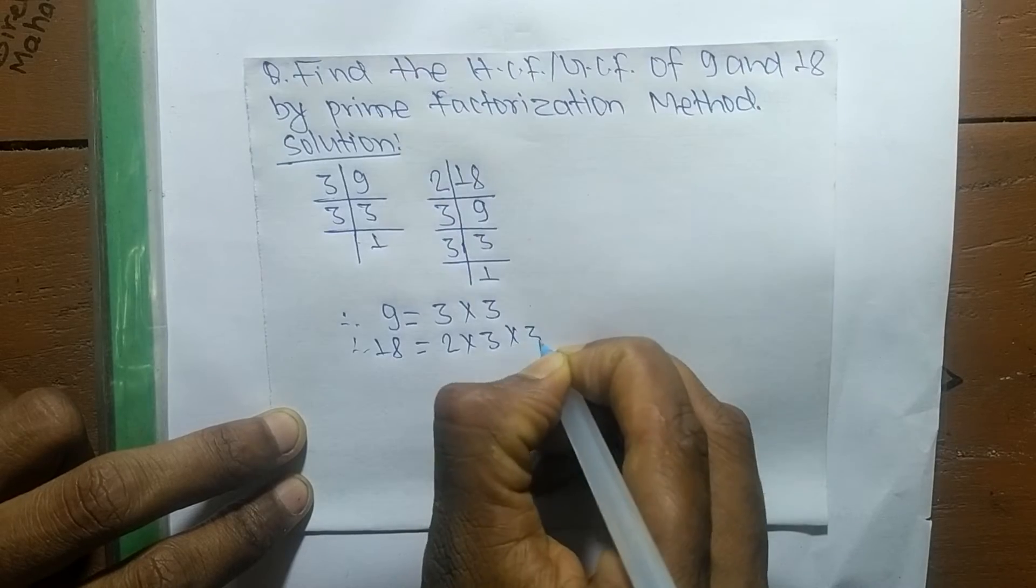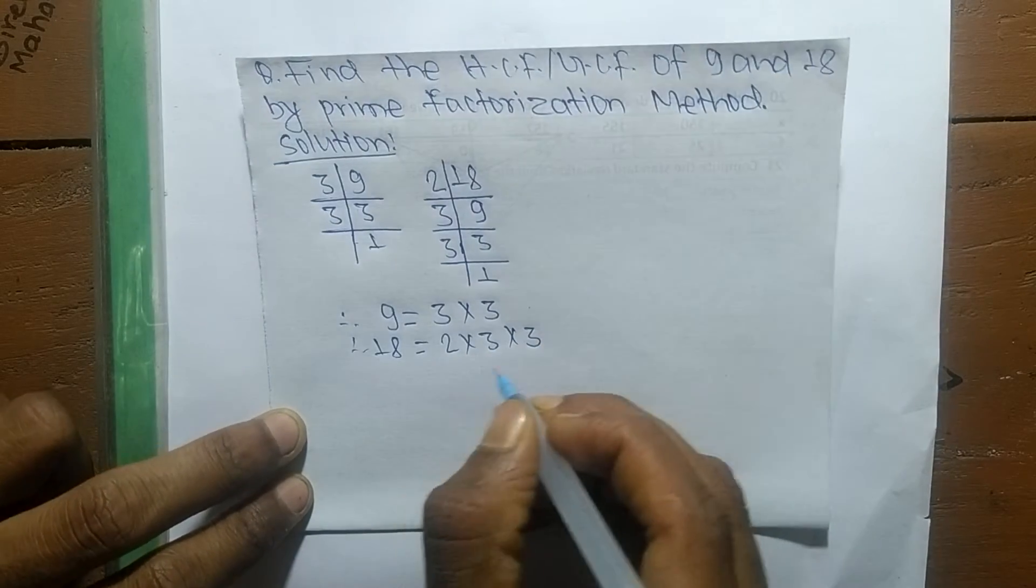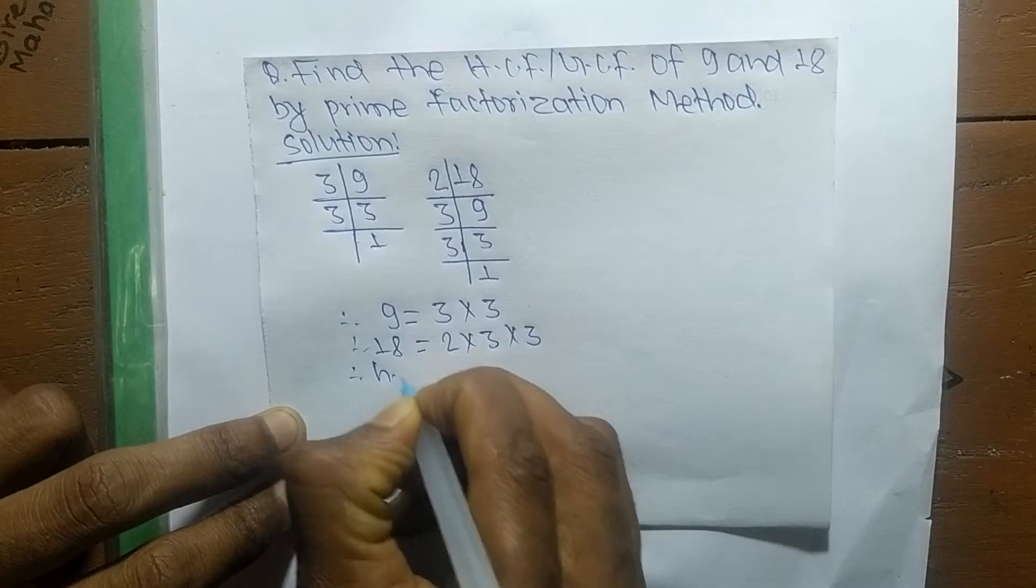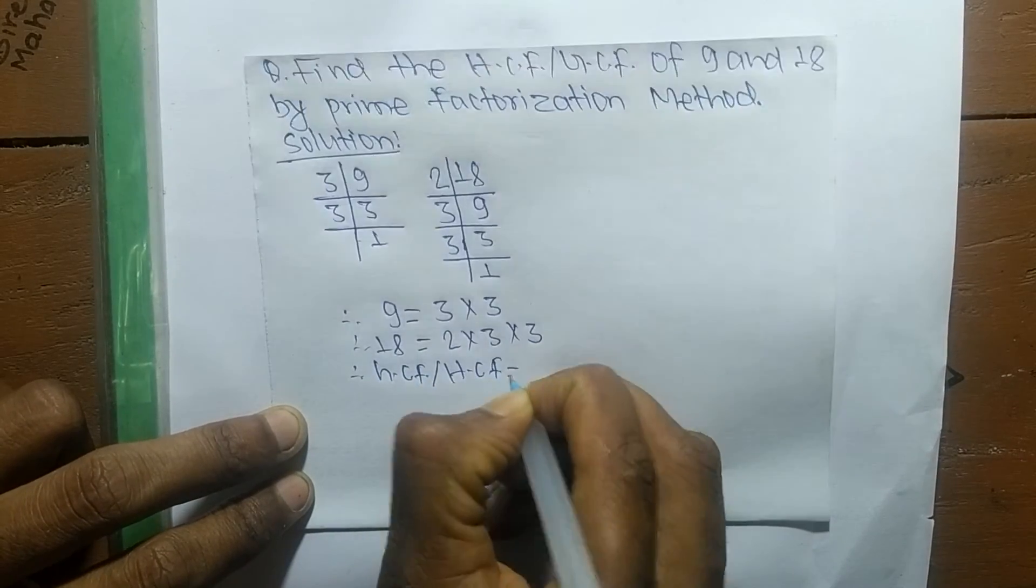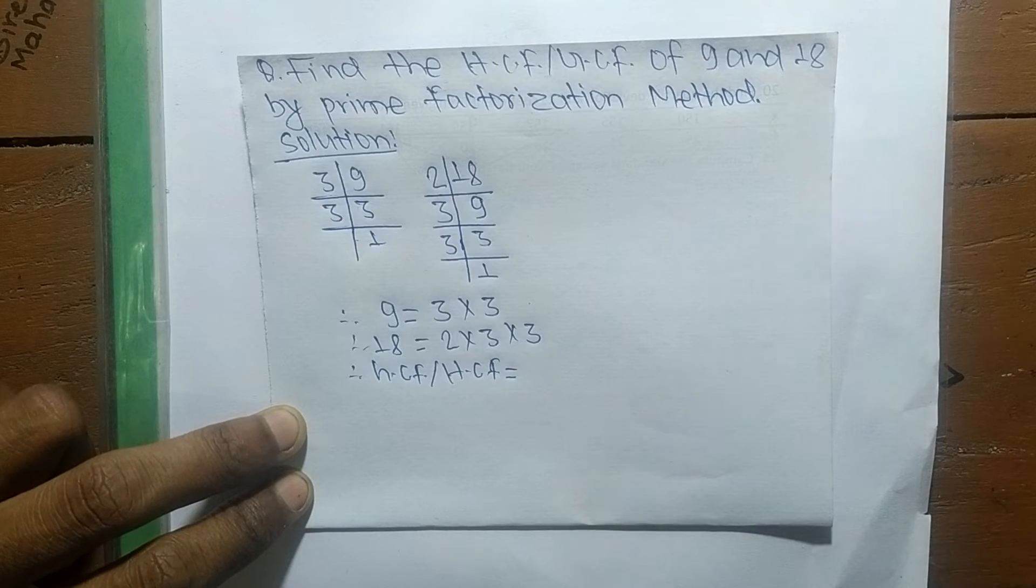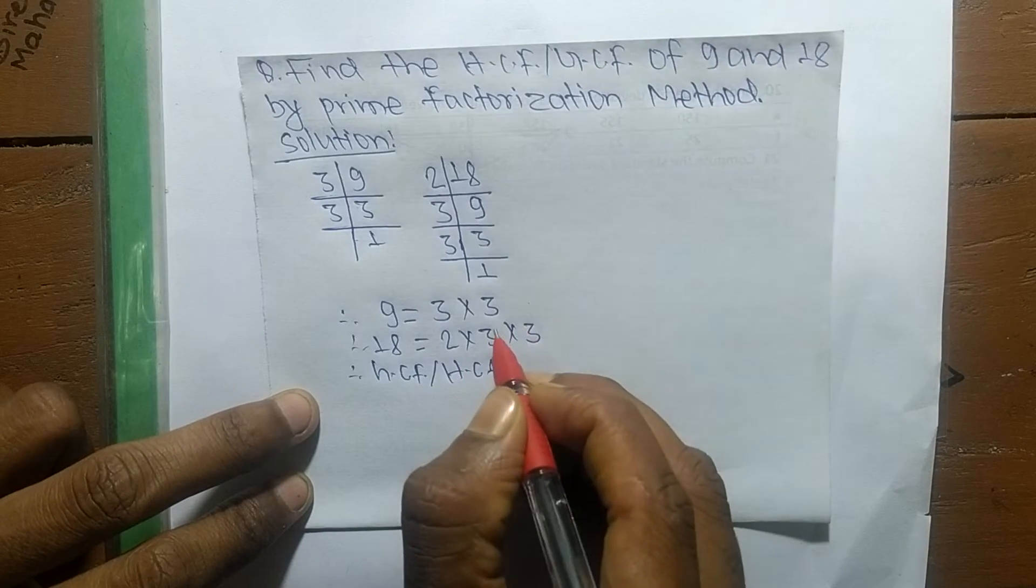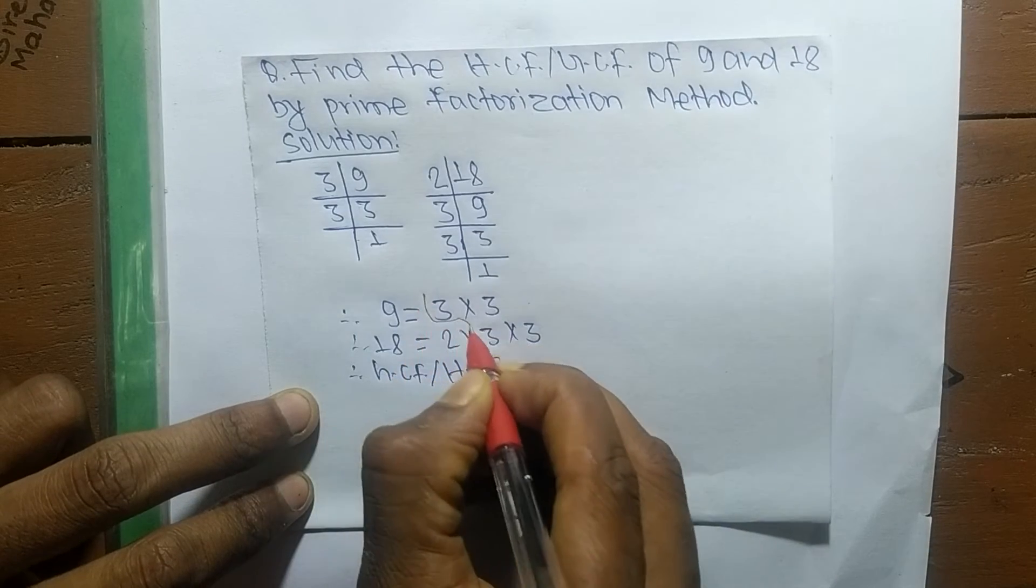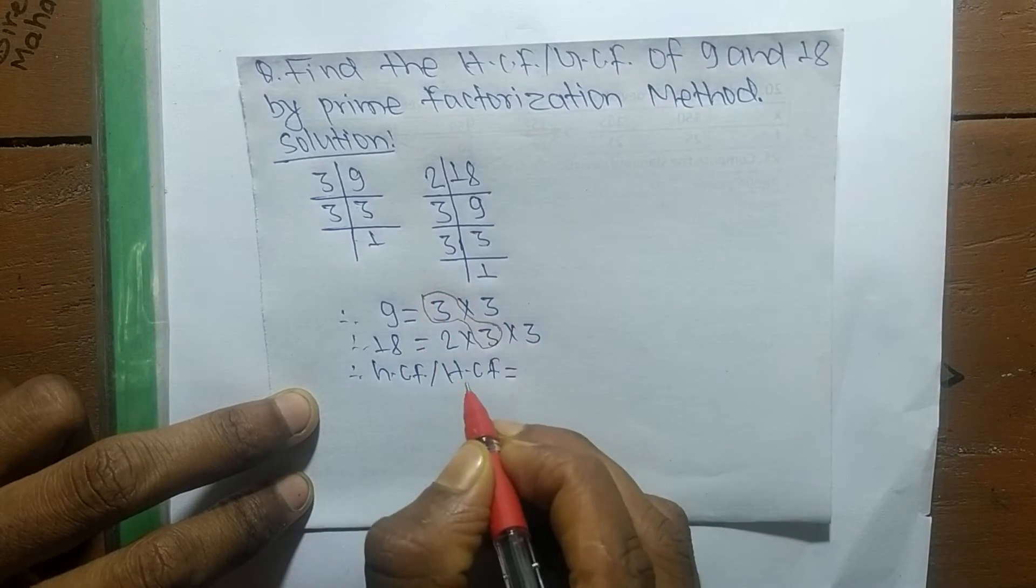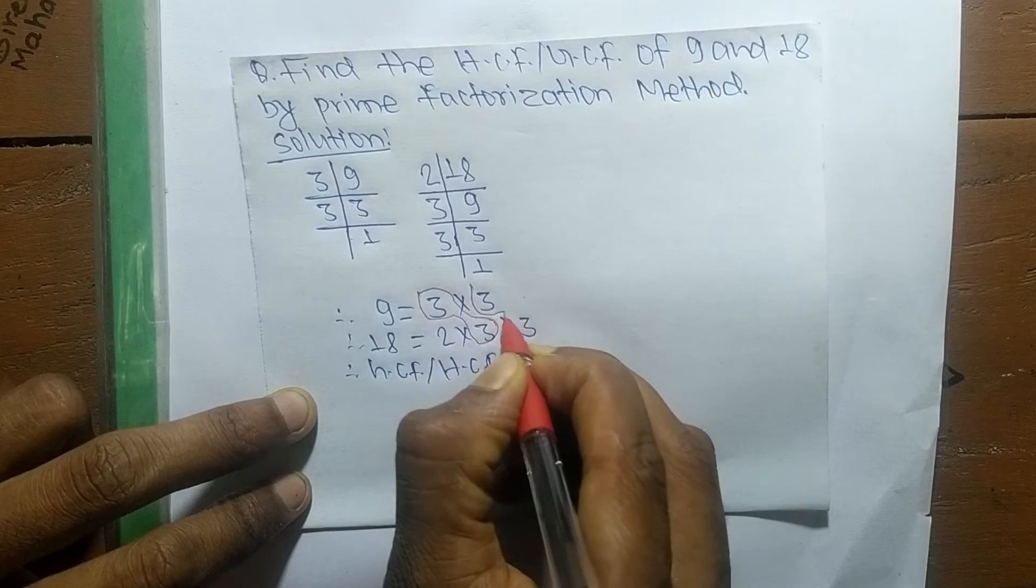After writing prime factors, now we determine the GCF or HCF. Find out the common elements in both the prime factors. The common element, first one is 3, likewise the second common here is also 3.